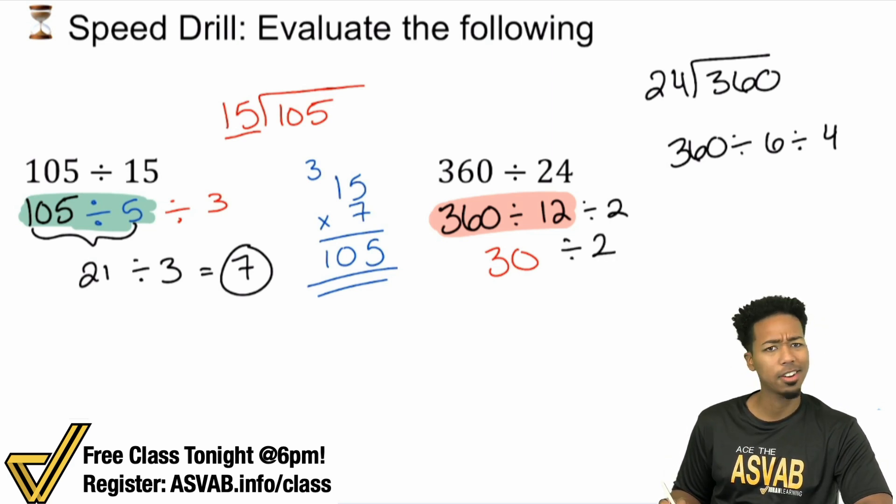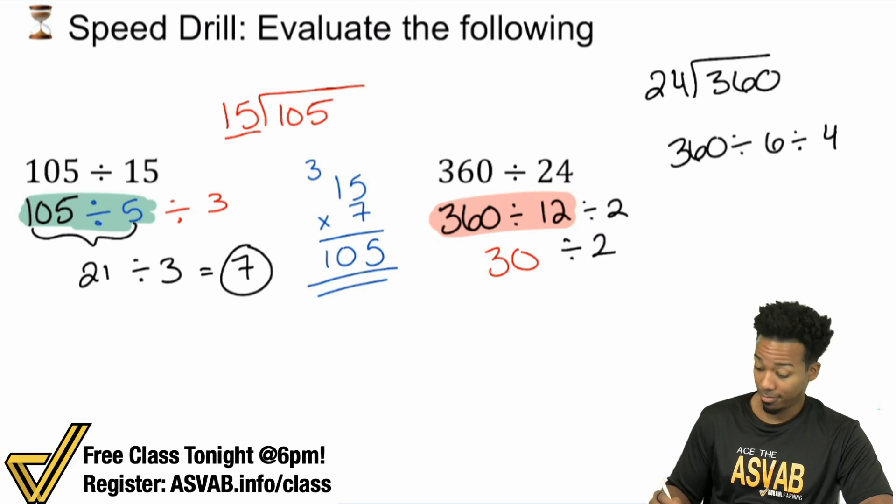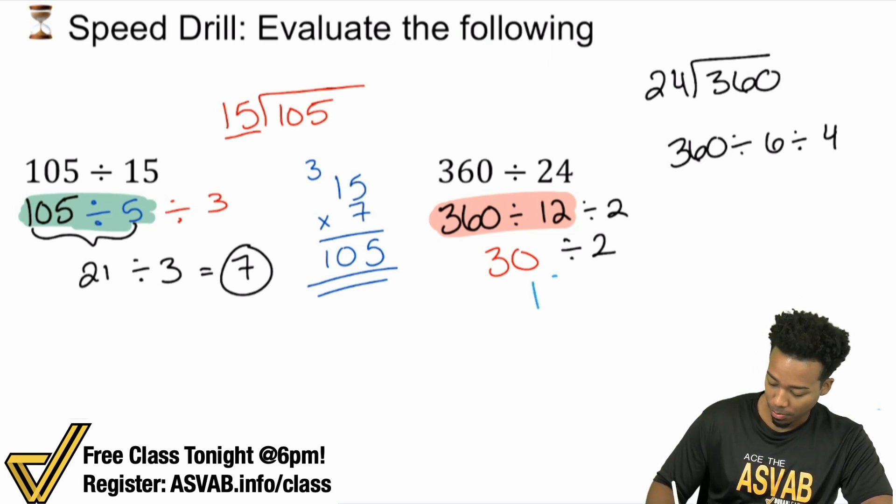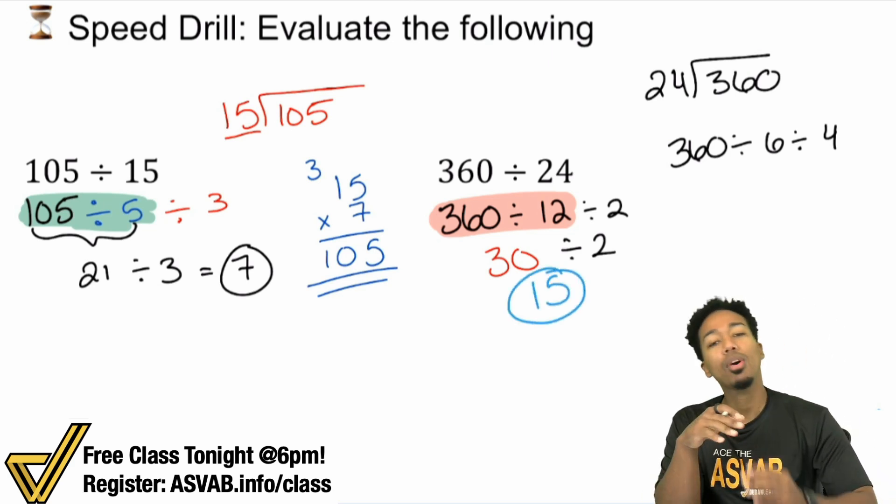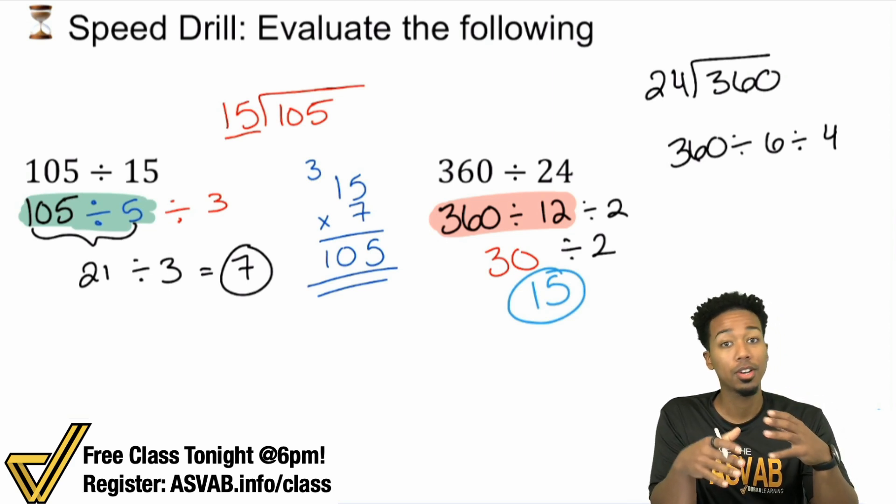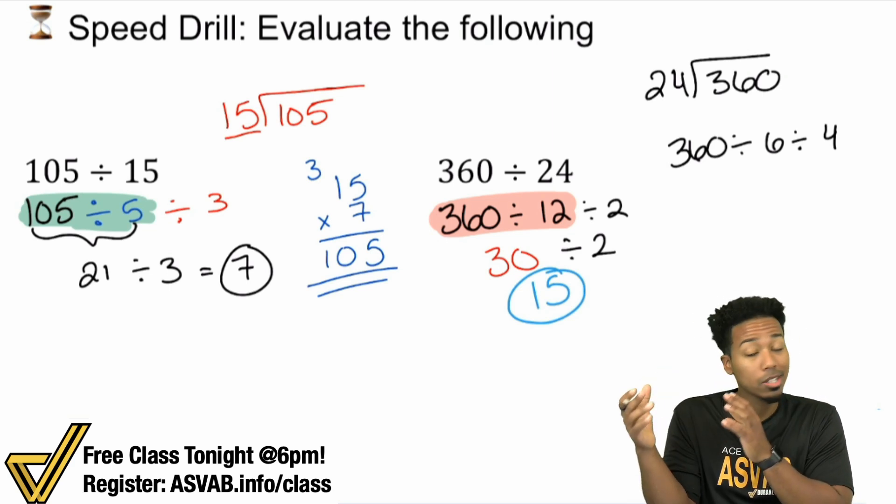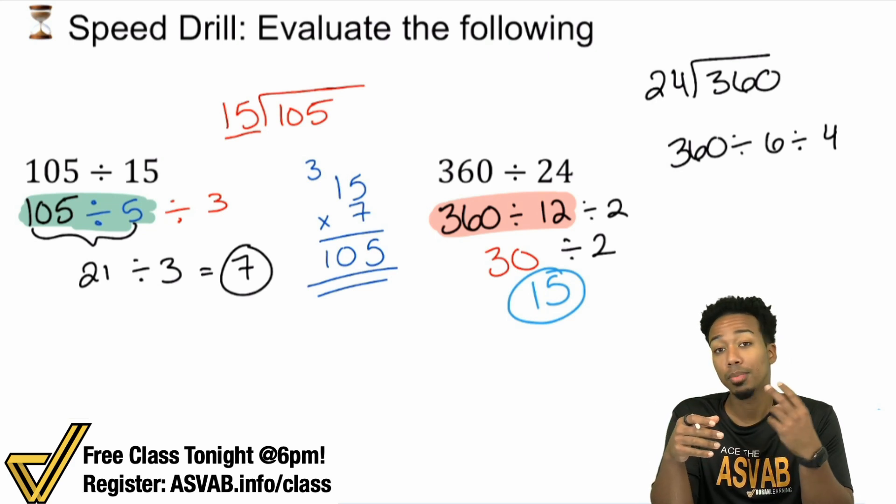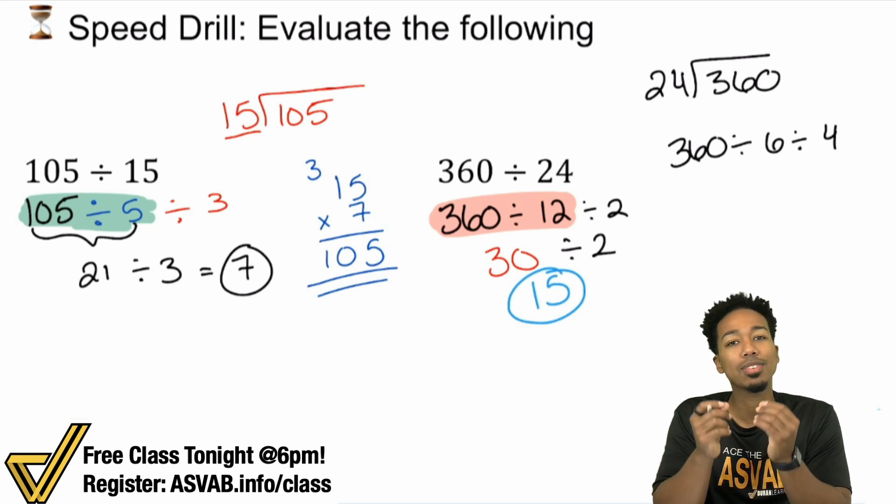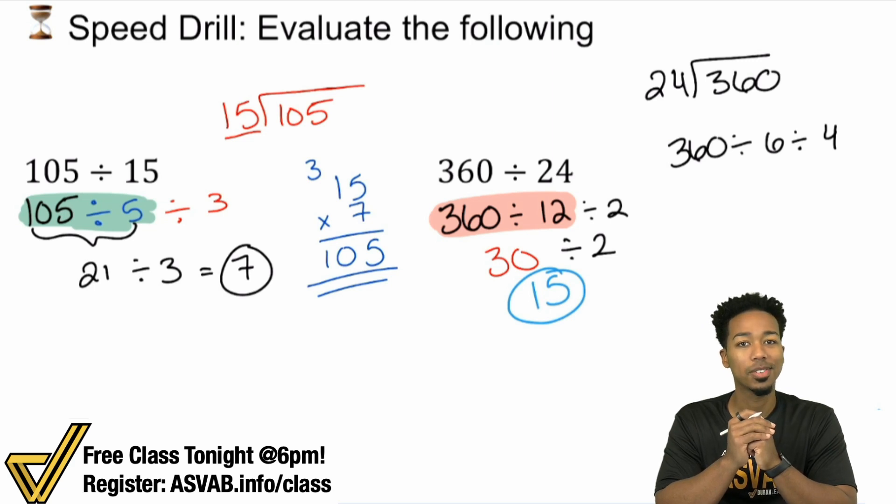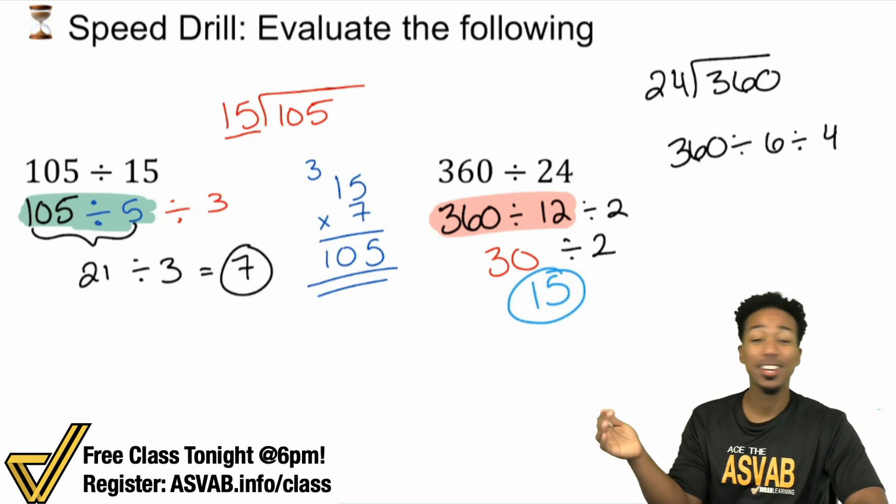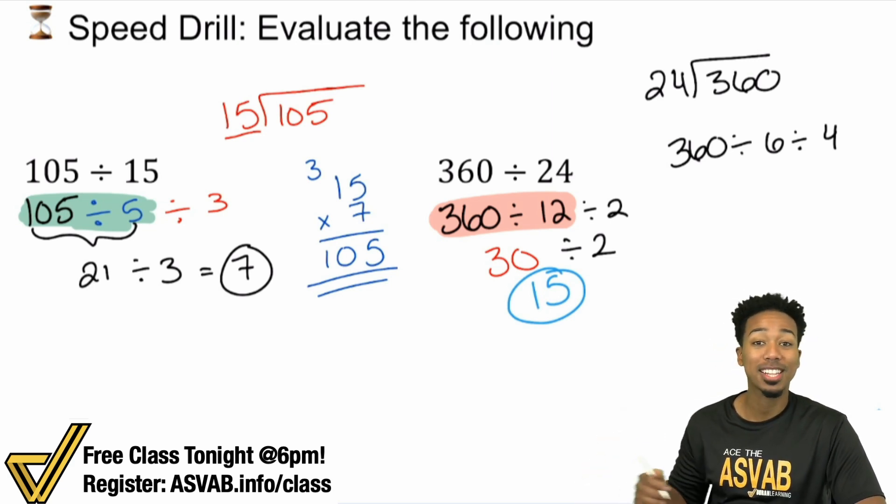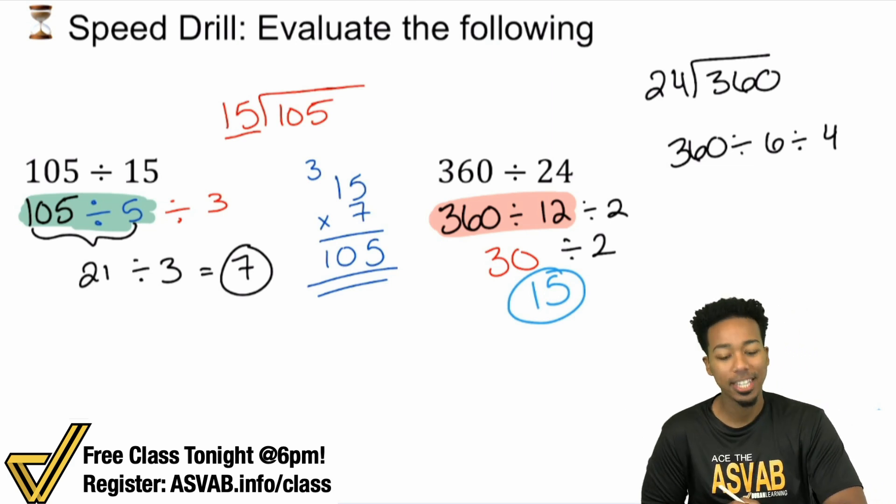And what's 30 divided by two? Cut that in half. 15. And there's your answer. 15 would be it. So the point of this, my ASVAB people, was to show you one, when it comes to doing math, you want to make sure you understand more than one way to do it because two, it's about saving time on the test itself. And so if you want to learn more about that, again, we've got a free practice test with a free class tonight if you're watching on a Monday.